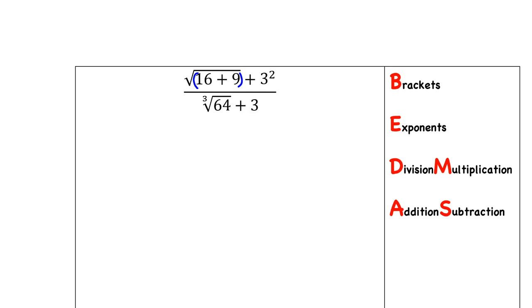The other thing that's very important is when you're dealing with a fraction, you always just work out what's on the top and work out what's on the bottom separately before trying to combine the things. Okay, so let's start. So the very first thing we need to do is deal with that thing in brackets, even though those brackets we put in, those brackets are important. So 16 plus 9 is 25 plus 3 squared over cube root of 64 plus 3. Okay, I've dealt with the brackets.